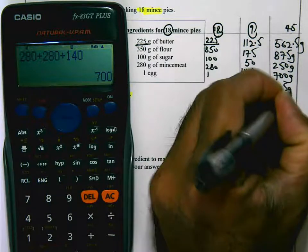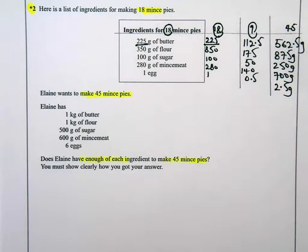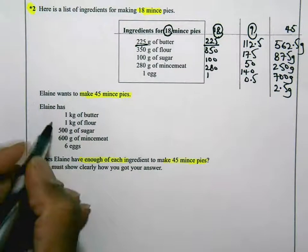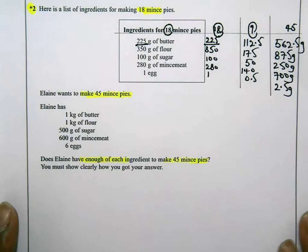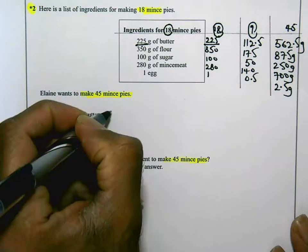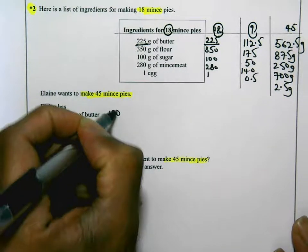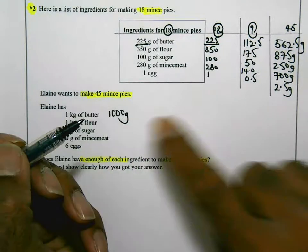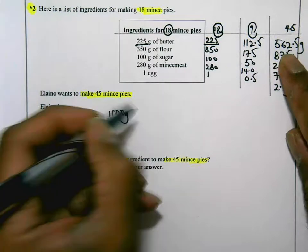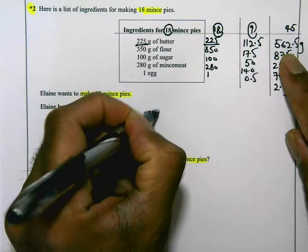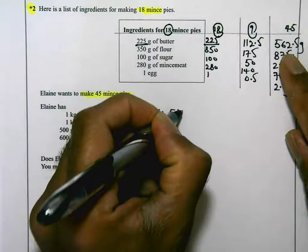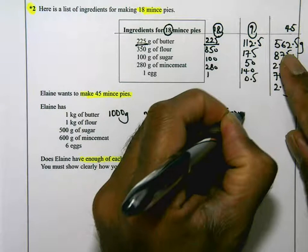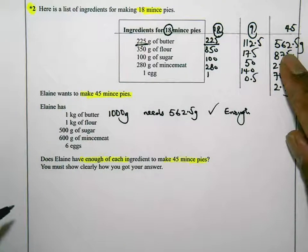Okay. So what they've said is Elaine has these ingredients. She has 1 kilogram of butter. 1 kilogram of butter is 1,000 grams. And is that enough? Well, she has 1,000 grams, she needs 562.5 grams. So yes, enough. I'm going to actually go through each of the ingredients like that and check whether she has enough.